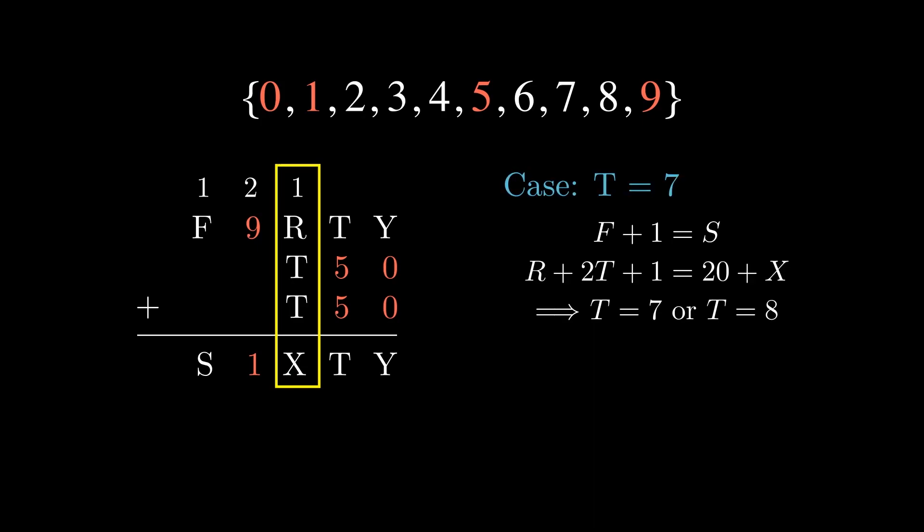Suppose T was equal to 7. This simplifies our equation to R plus 15 is equal to 20 plus X. The only way we can assign digits for this to be true is setting R to equal 8 and X to equal 3. This seems to work, right? But wait, let's not forget the first equation we have in front of us. F plus 1 equals S means that S and F are adjacent numbers. But if we set T to equal 7, we no longer have any adjacencies in our remaining digits. This means T must be 8.